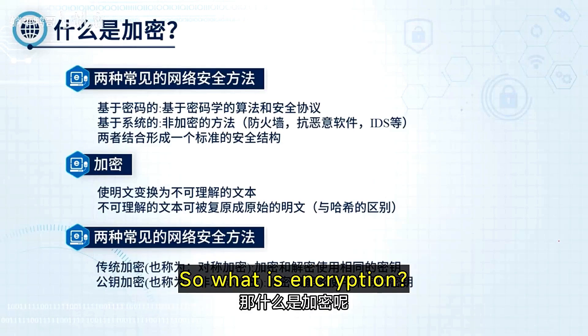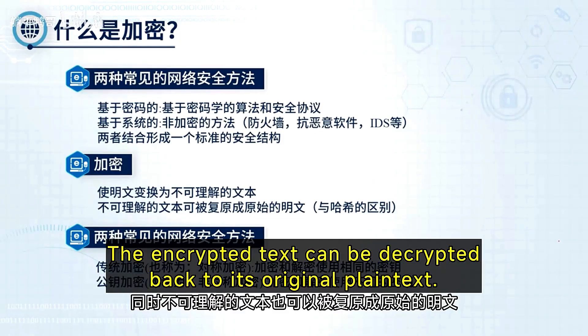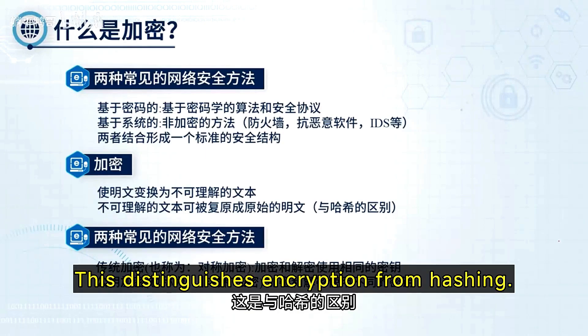So what is encryption? Encryption converts readable text into scrambled, unreadable code. The encrypted text can be decrypted back to its original plaintext. This distinguishes encryption from hashing.